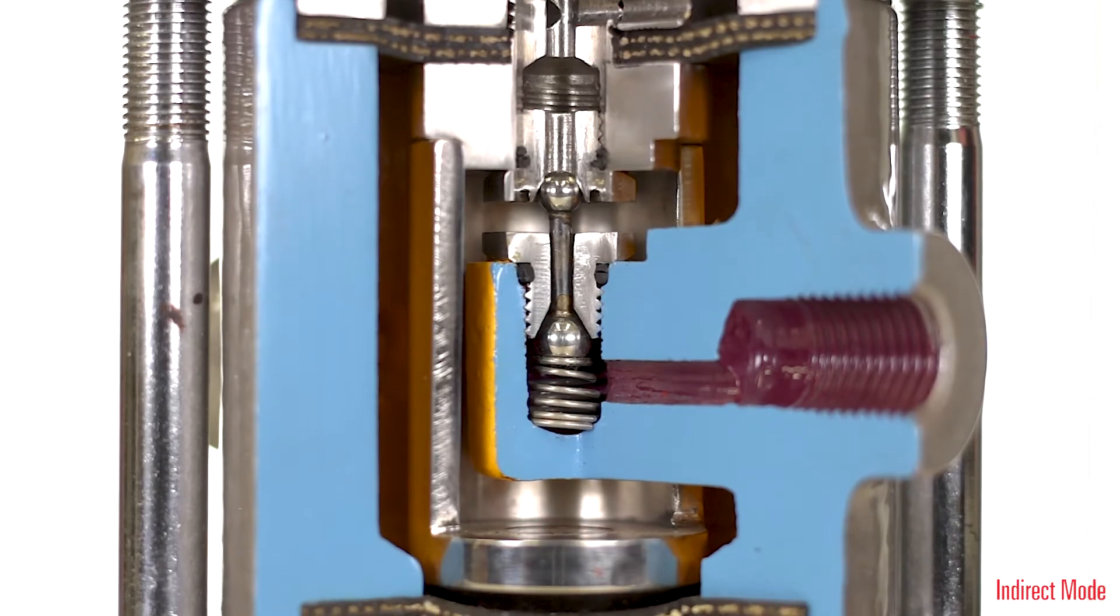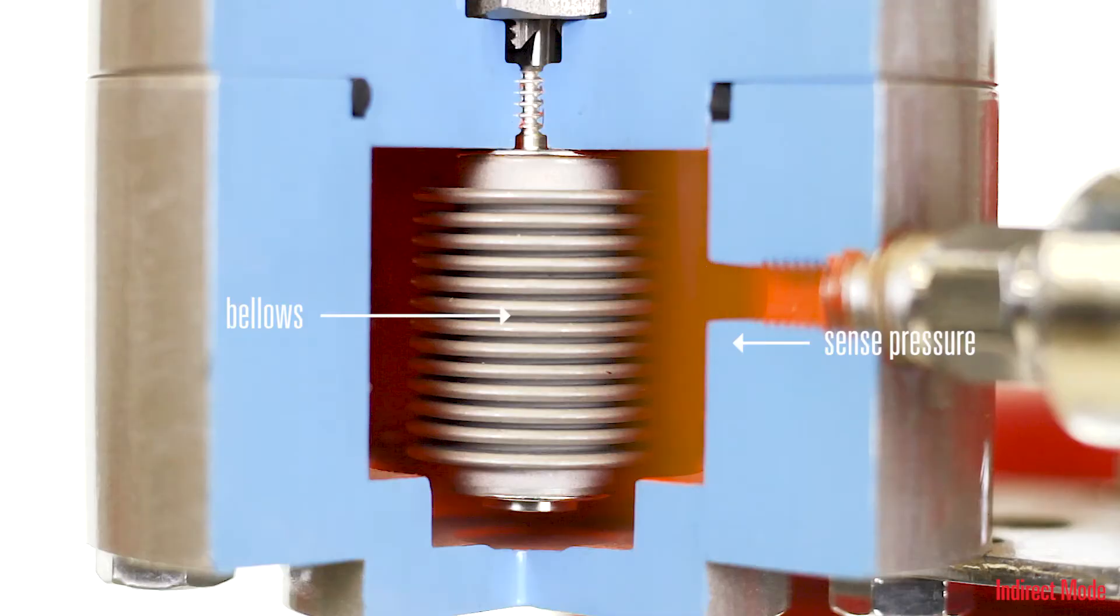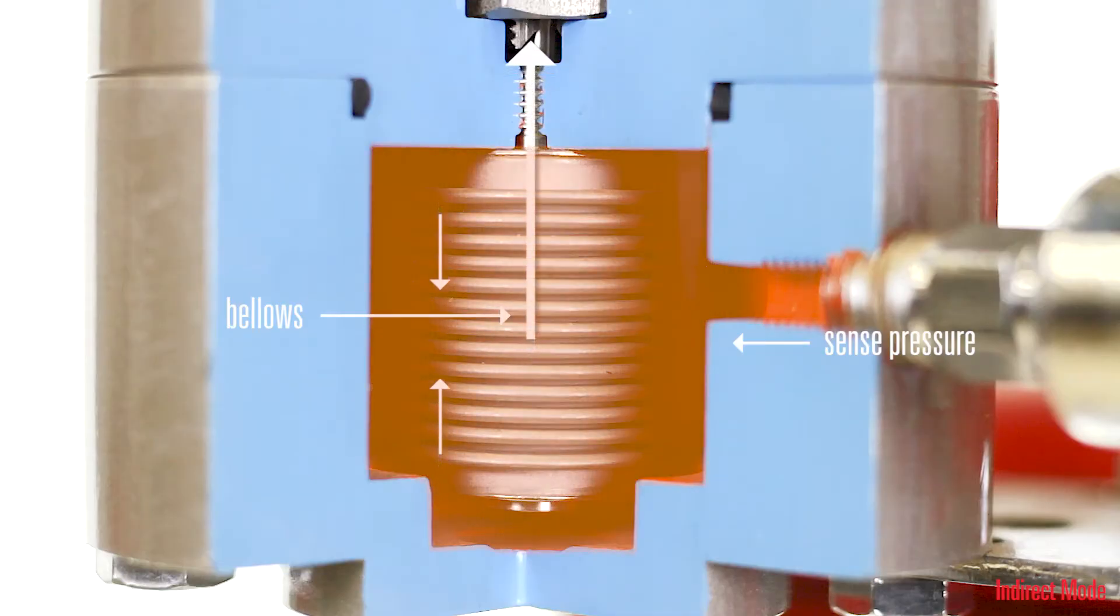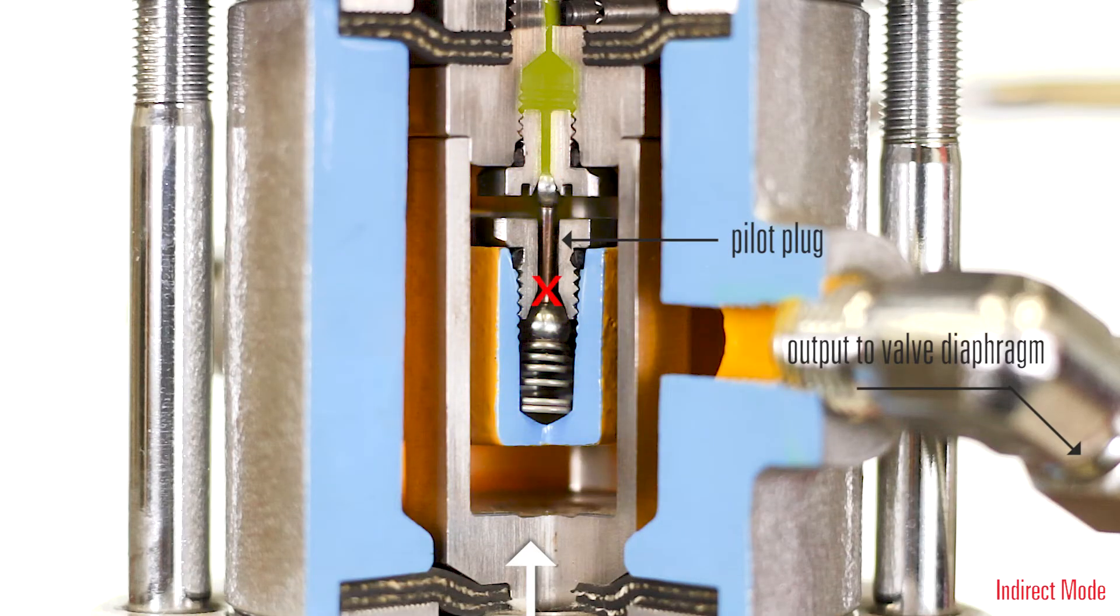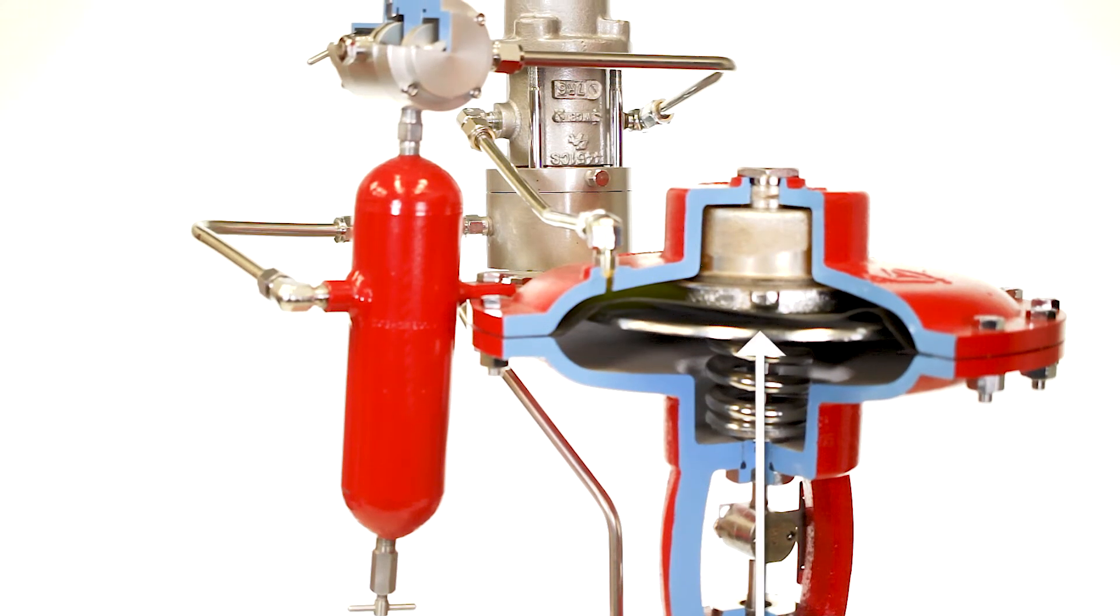In indirect mode, an increase in sense pressure compresses the bellows assembly up, which repositions the pilot plug, closing off the output to the valve diaphragm and opening the vent port. This will cause the valve to open.